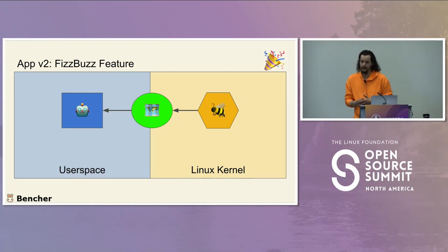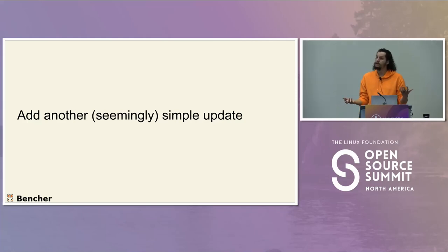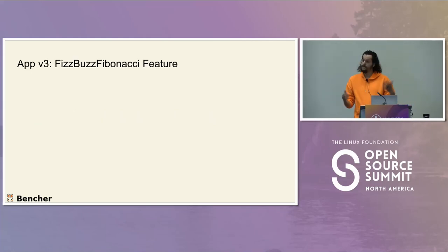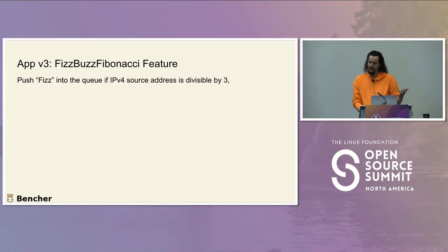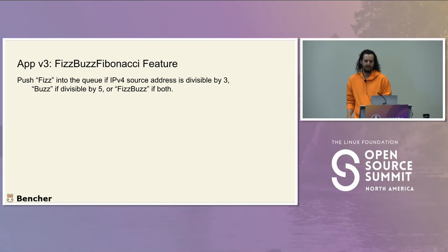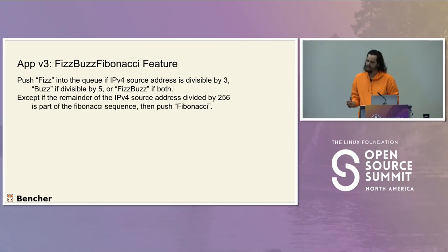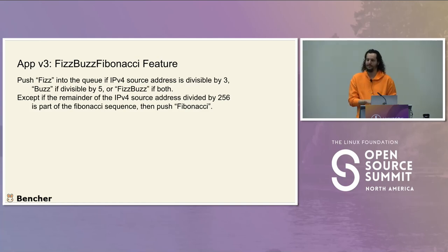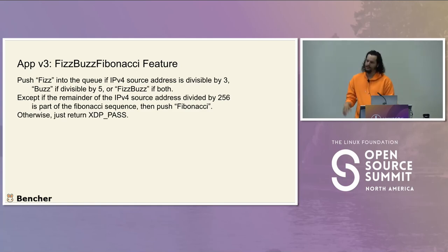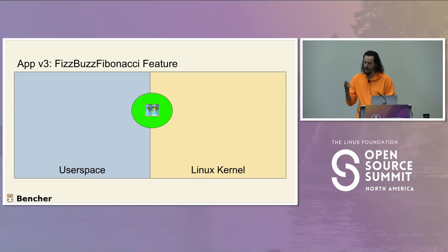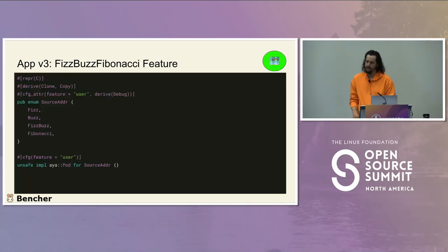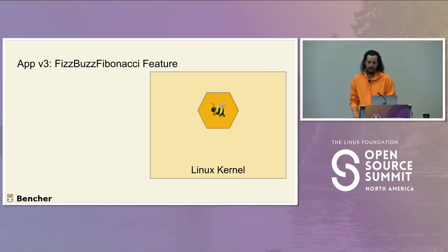One more seemingly simple change: FizzBuzz Fibonacci. Do the same as before — Fizz if divisible by three, Buzz if divisible by five, FizzBuzz if both. Except if the IPv4 source address divided by 256 is part of the Fibonacci sequence, then return Fibonacci. A little more work is involved. We have to update the shared message enum to add Fibonacci as an option.